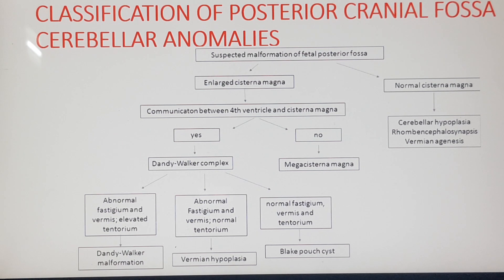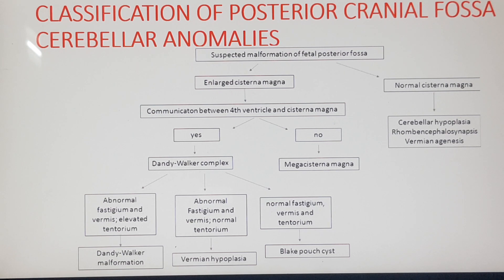When we have a suspicion of malformation of the posterior fossa, the first question to be asked is: is the cisterna magna normal or enlarged? In the mid trimester, up to 10 mm diameter is considered normal; more than 10 mm is considered abnormal.